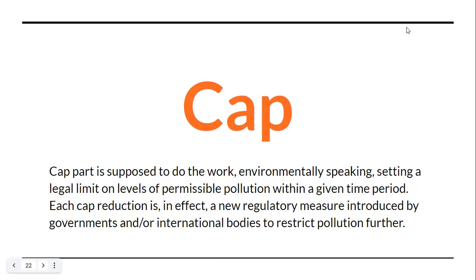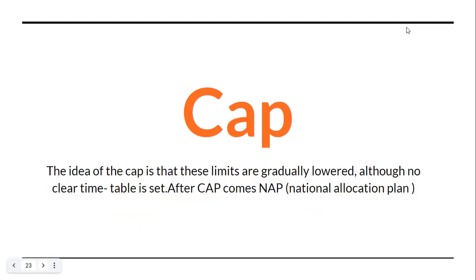Each CAP reduction is in effect a new regulatory measure introduced by governments or international bodies to restrict pollution further. Though critics say there is no clear timetable set for this CAP reduction, conceptually the idea is that these limits are gradually lowered so that the norms become more stringent for polluting industries.